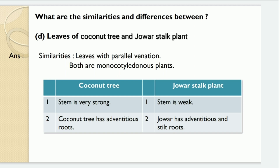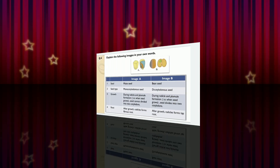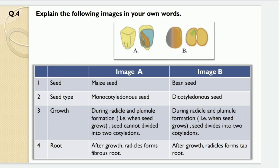Now the similarities and differences between coconut tree and jawar stalk plant. The similarities are: both have leaves with parallel venation and both are monocotyledonous plants. The differences are: the stem is very strong in coconut tree and the stem is very weak in jawar plant. Coconut tree has adventitious roots and jawar has adventitious and stilt roots.